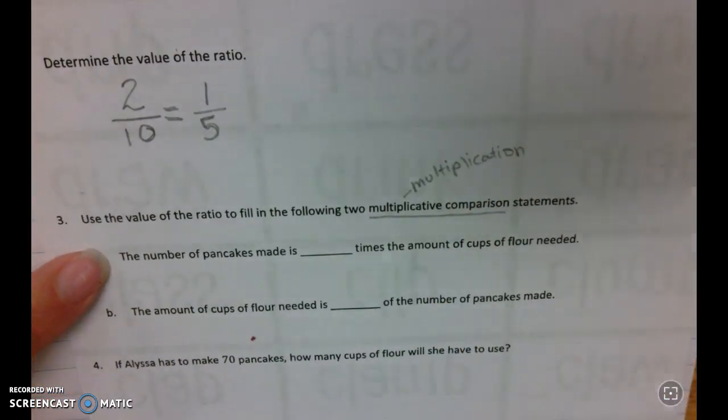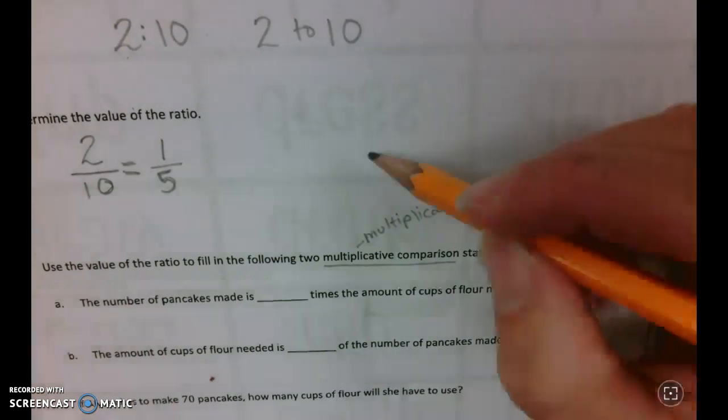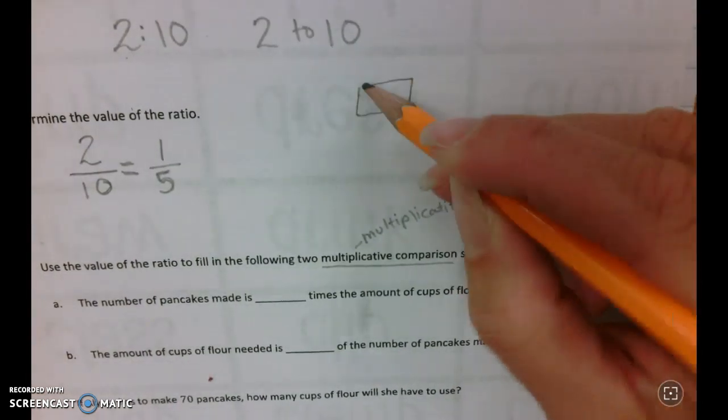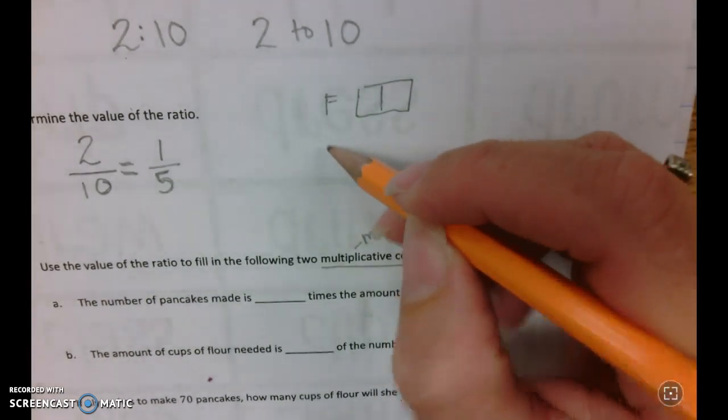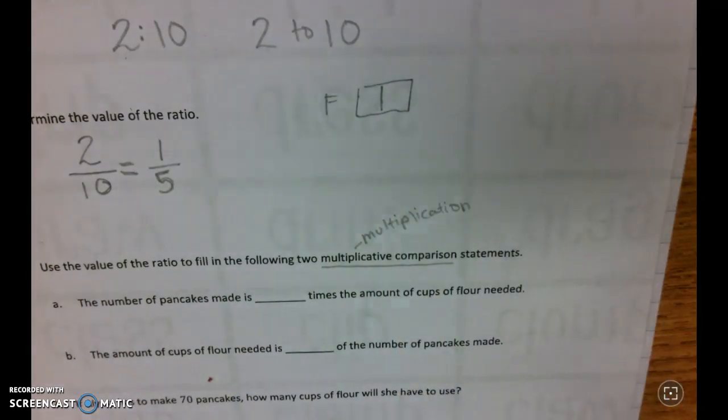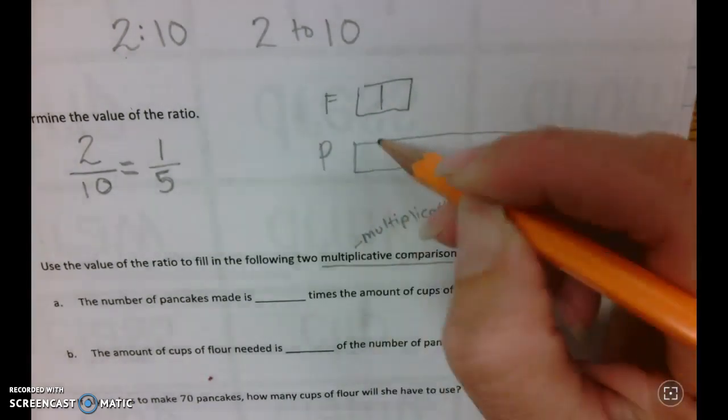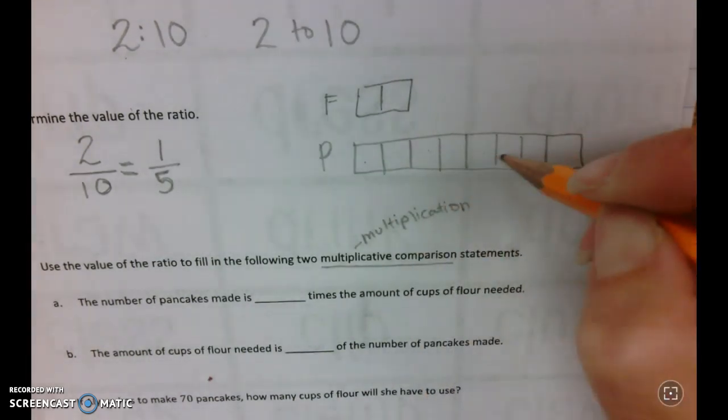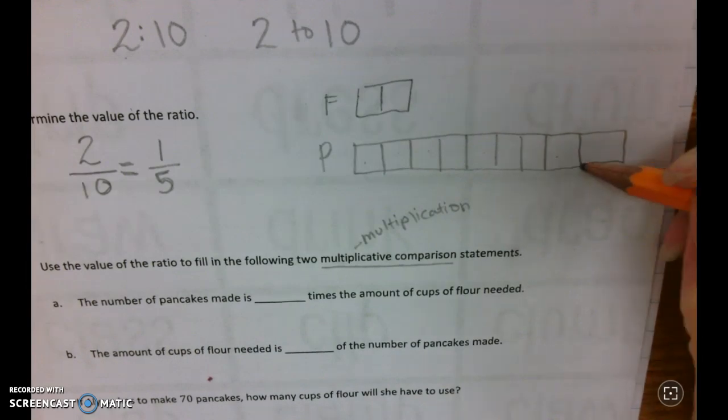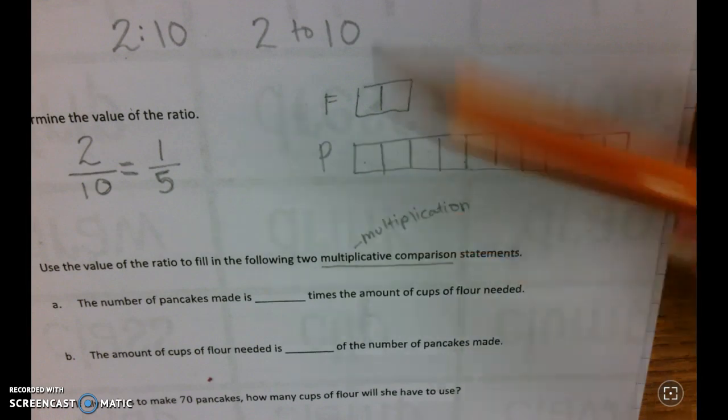If we're looking at the number of pancakes made is blank times the amount of flour needed, let's go back to one of those tape diagrams. We have two groups of flour - and you should draw this tape diagram in your notebook as well. Remember, anything that I do on my notebook I expect you to do in yours as well - compared to pancakes. We know it's a relationship of 2 to 10. What do we notice about how many groups of pancakes there are for every one of the pieces of flour?